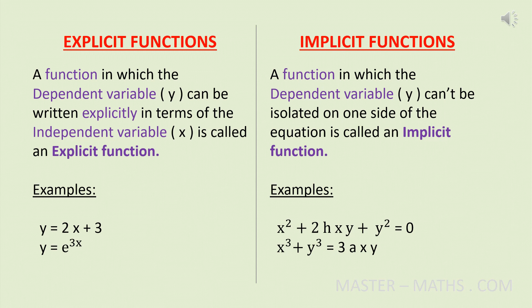First, explicit function. It is a function in which the dependent variable y can be written explicitly in terms of the independent variable x. That is, you can express y in terms of x. Your equation can be written in the format y is equal to some expression in terms of x. For example, y is equal to 2x plus 3, y is equal to e to the power 3x, and so on.